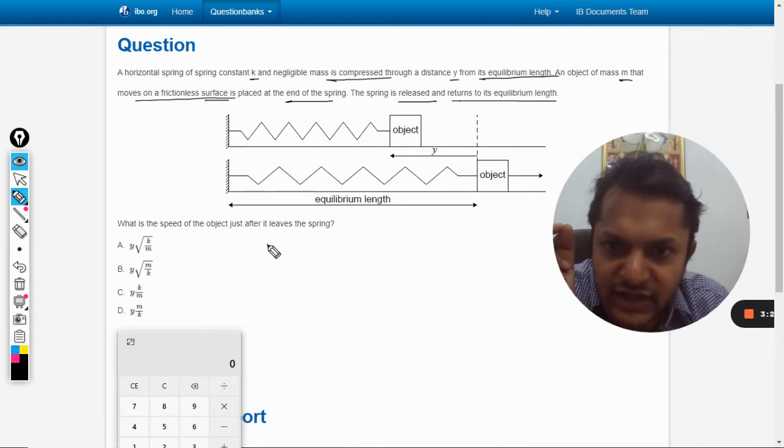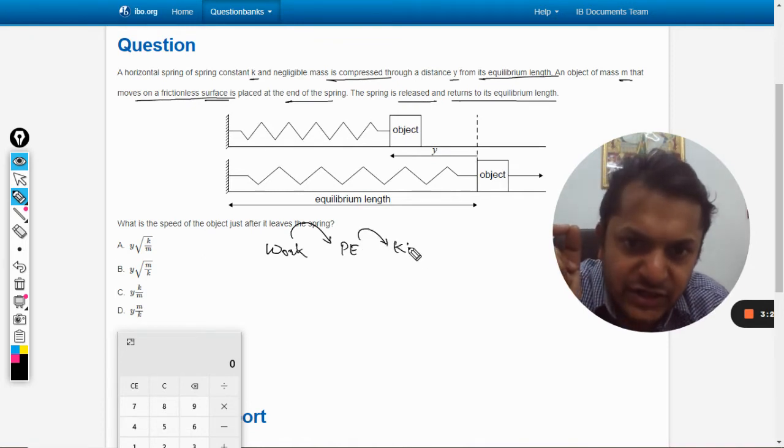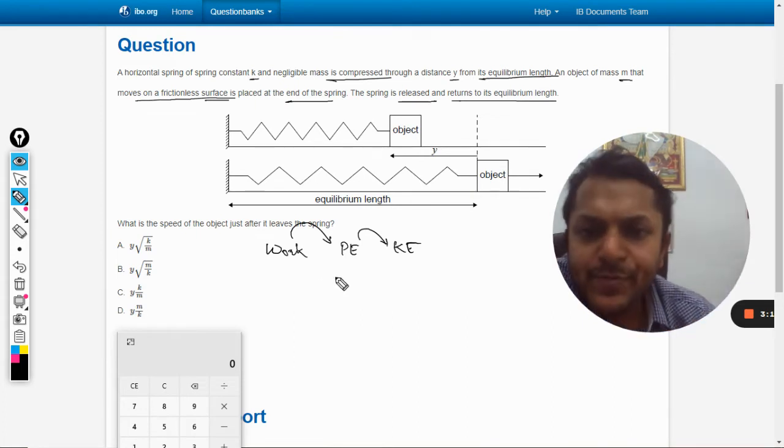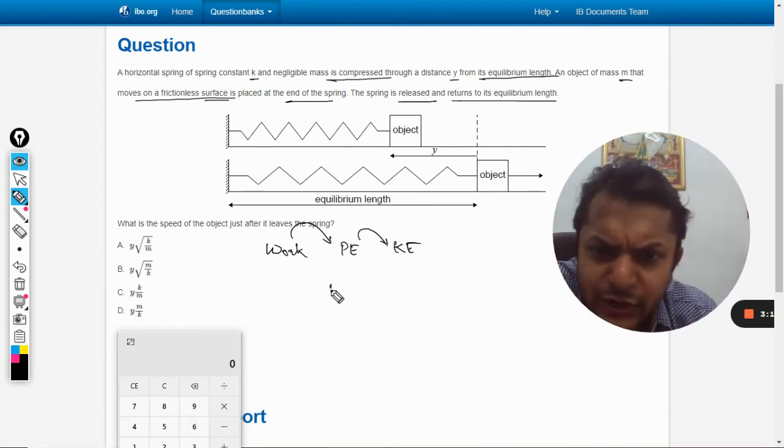So what is the working? The work is converted into potential energy, and then potential energy is converted into the kinetic energy of the body. We know that the potential energy is given by half into k into extension or the compression.